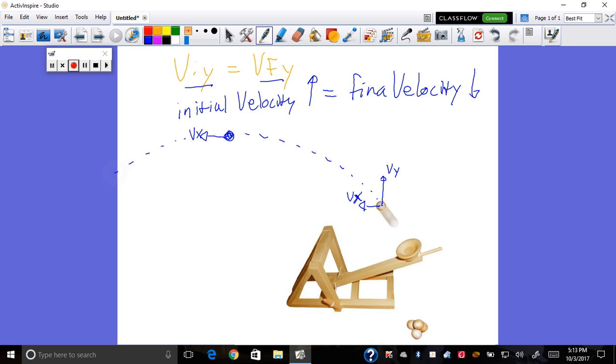And then, when it falls down at the exact same height that it started at, then it's going to have a V-X that is the same, and there's my initial velocity, a final velocity Y that is down. But that was equal to what I had at the beginning.